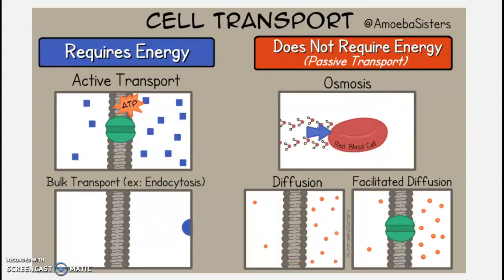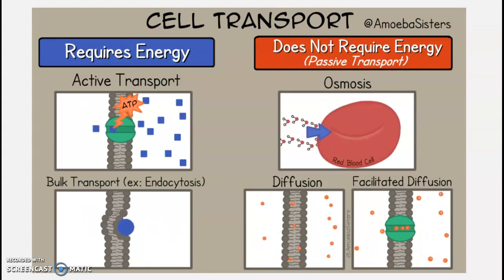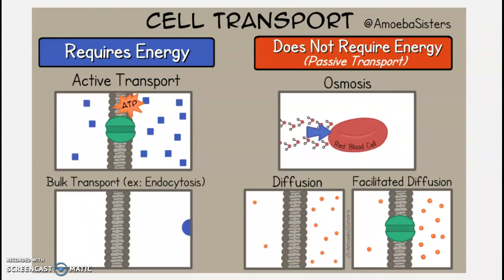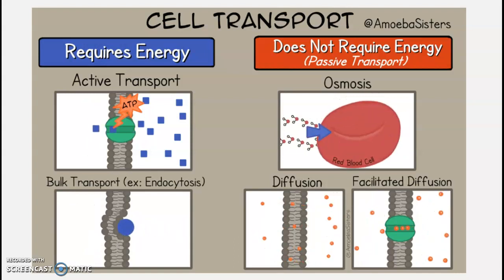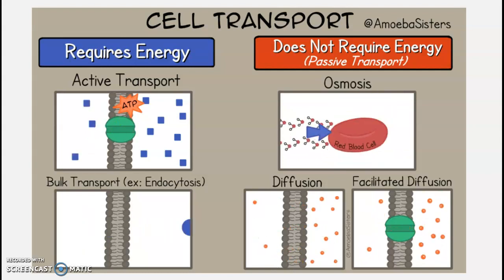Sometimes cell transport requires energy. This energy molecule is called ATP. In active transport, molecules have to be moved from a low concentration to a high concentration, or up the concentration gradient — this requires energy. Other types of cell transport do not require energy; molecules move from high concentration to low concentration. This is called passive transport.